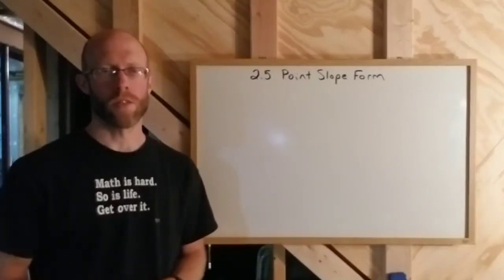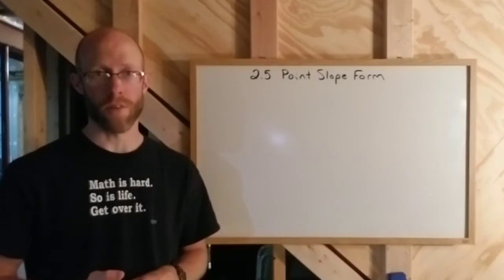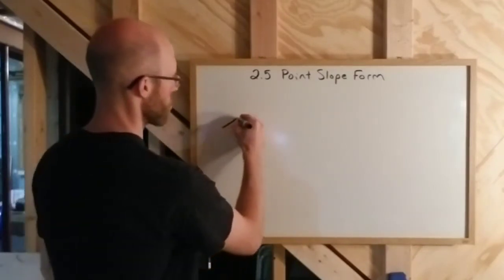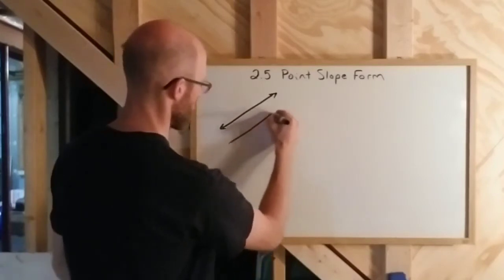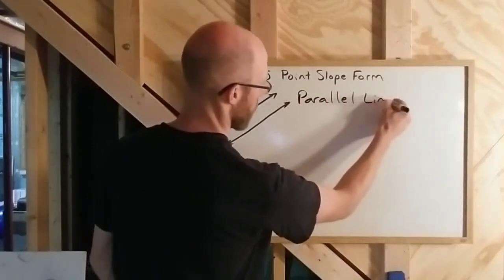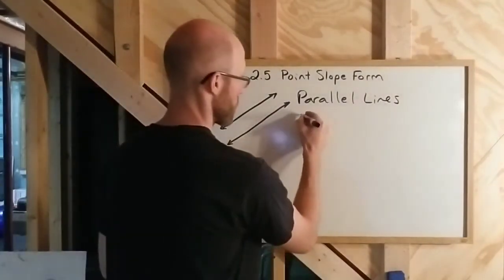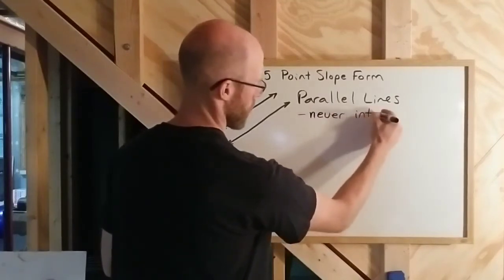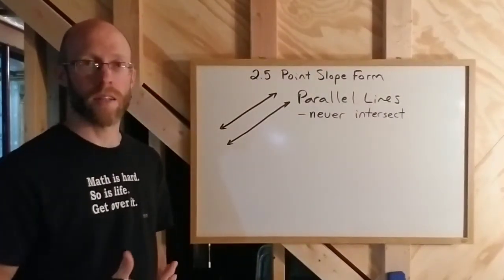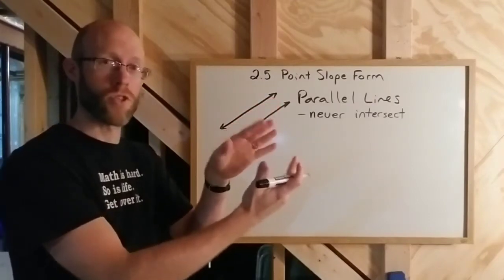The last thing to talk about in section 2.5 is parallel and perpendicular lines and how their slopes relate to each other. Parallel lines are kind of an easy one. The idea is that two lines are parallel if they never intersect — they never cross. Because they never intersect, that must mean they travel at the same rate, the same rate of change, meaning their slopes are the same.